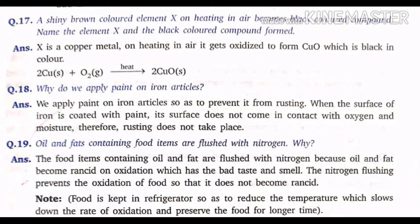Today's question is from Chapter 1, question number 7. A shiny brown colored element X, on heating in air, becomes a black colored compound. Name the element X and the black colored compound formed.